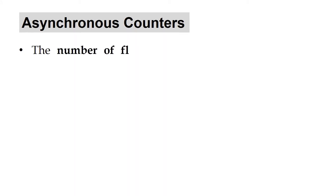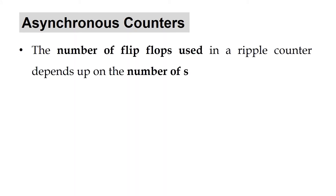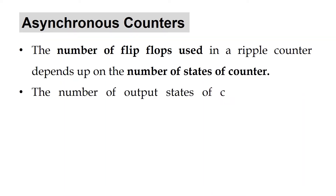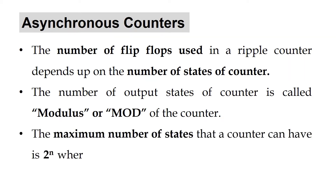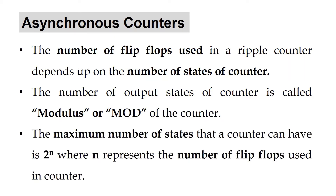The number of flip-flops used in a ripple counter depends on the number of states of the counter. The number of output states is called the modulus or mod of the counter. The maximum number of states is 2 raised to n, where n is the number of flip-flops. For example, with two flip-flops, you get a mod 4 counter.